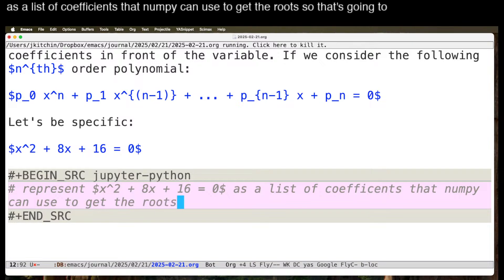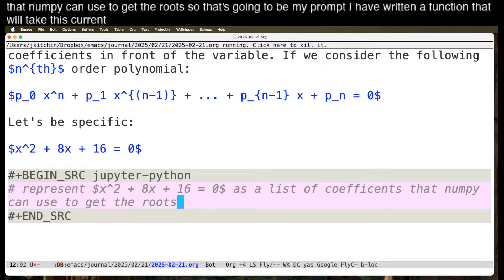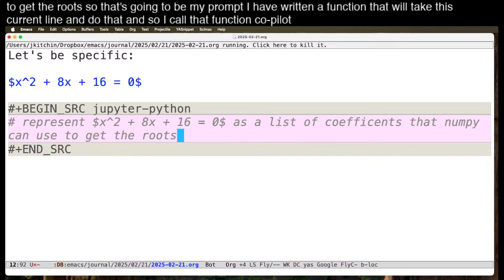So that's going to be my prompt. I have written a function that will take this current line and do that, and so I call that function Copilot. So I'll press C here.